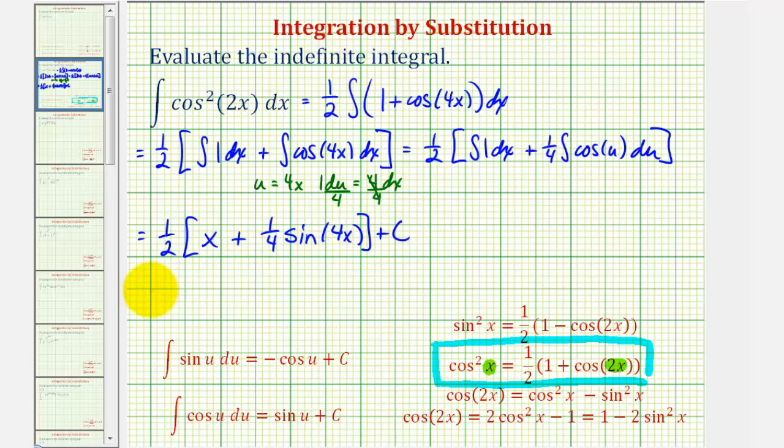Let's go ahead and distribute here. We would have one-half x plus one-eighth sine 4x plus c. This would be our anti-derivative. I hope you found this helpful.